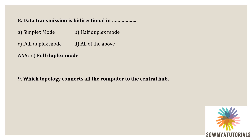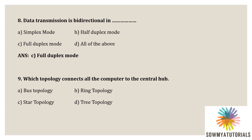Next question: which topology connects all the computers to the central hub? Options are option A - bus topology, option B - ring topology, option C - star topology, option D - tree topology. The correct option is star topology, because in star topology all computers are connected to the central hub. So option C, star, is the correct answer.